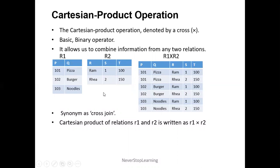For example, here we have table r1 with two attributes and three tuples, and table r2 with three attributes and two tuples. Cartesian product combines information from these two tables. When we do r1 cross r2, each and every row of r1 gets operated with each and every row of r2.